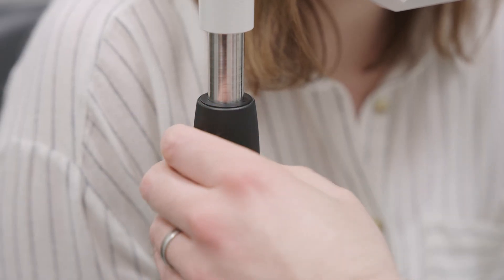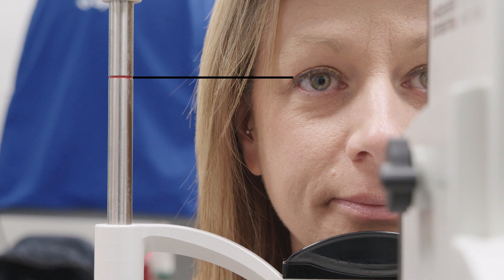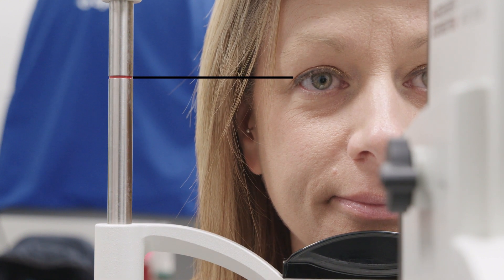The head rest has a red marker to assist with the positioning of the patient's eye. The outer canthus of the eye is best placed just below this marker to give the best range of camera head adjustment.